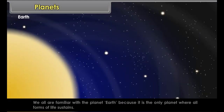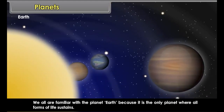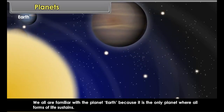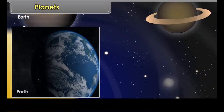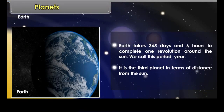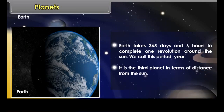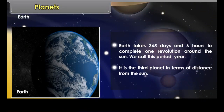Earth is the only planet where all forms of life sustain. Earth takes 365 days and 6 hours to complete one revolution around the sun — we call this period a year. It is the third planet in terms of distance from the sun.